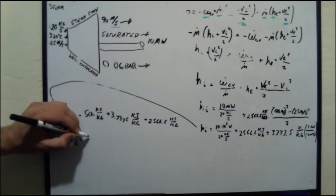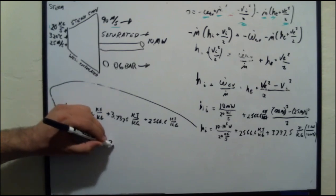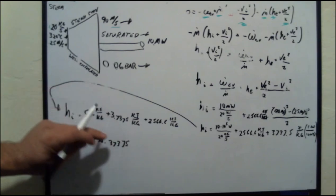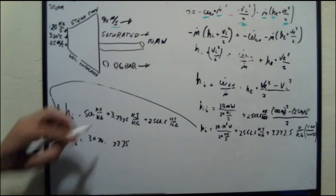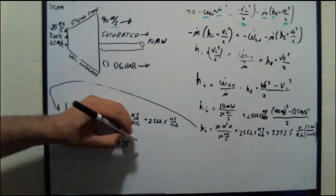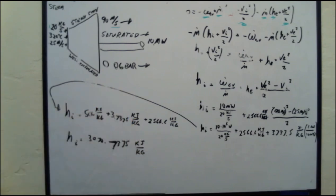There we have a converted unit and that just simplifies by adding them all together to say our enthalpy in is 3070.7375 kilojoules per kilogram.